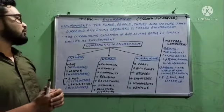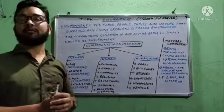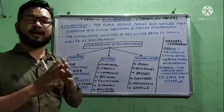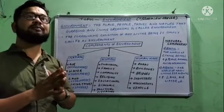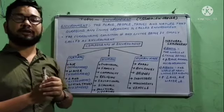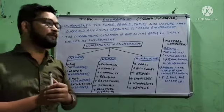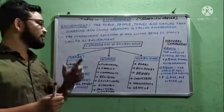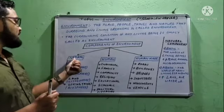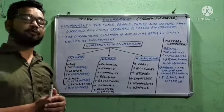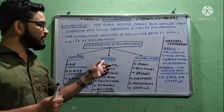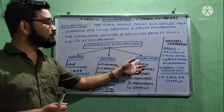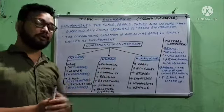Next, we will go to the components of environment. Components means what is included in environment — what are the basic parts of environment. There are three basic components: the first is the natural component, the second is the human component, and the third is the human-made component.